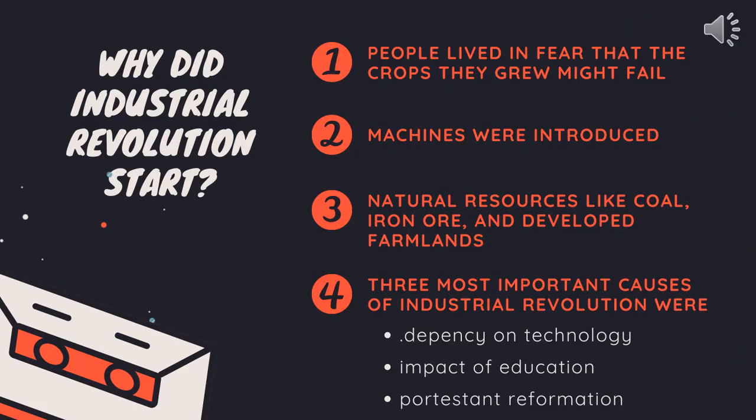Why did the industrial revolution start? First, people lived in fear that the crops they grew might fail. Second, machines were introduced. Third, natural resources like coal, iron ore and developed farmland. The three most important causes of the industrial revolution were the dependency on technology, impact of education and Protestant reformation.